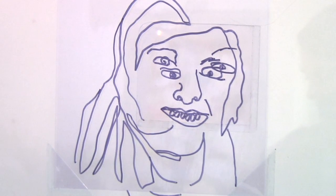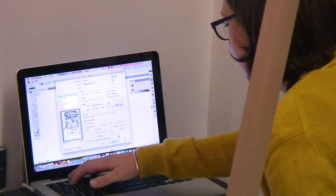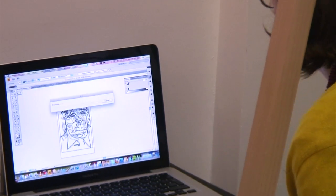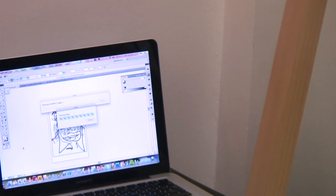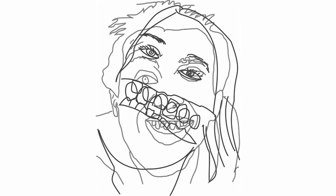I then take the two images that are drawn by the two people, scan them into a computer, manipulate them slightly in Illustrator, and print them off. For Dazeem I've specifically created dual images so that the two people interacting with one another get dual portraits that they can take home with them.